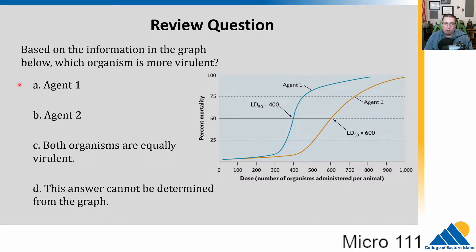Our possible answers are: A, agent 1; B, agent 2; C, both are equally virulent; D, this answer cannot be determined from this graph. Go ahead and pause the video and think about that one.